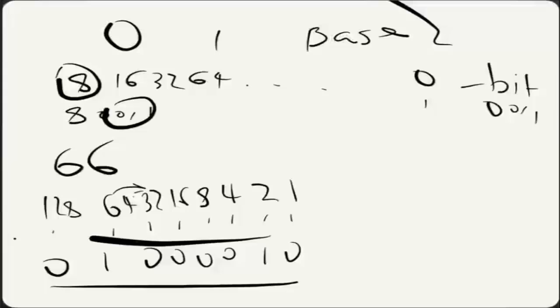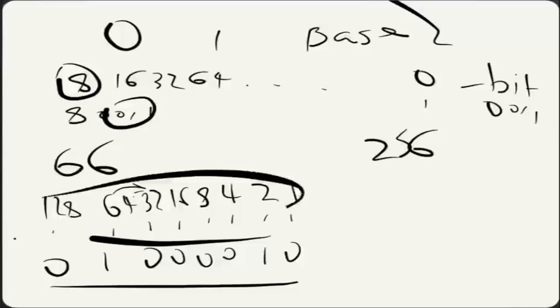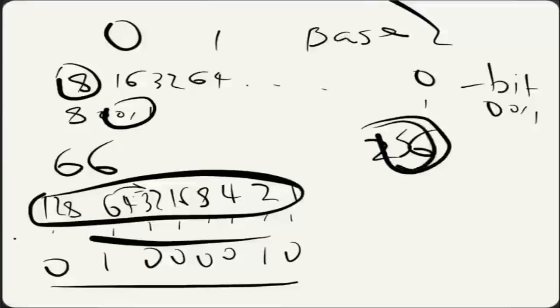So that was basically a crash course in converting numbers to binary. I also want to mention — if you know about old arcade systems and know that they had a limited amount of colors and a limited amount of tones — it's because 8-bit systems can only represent 256 values. If you added up all those numbers, it would equal 256. The reason they only had a limited number of colors and tones is because they could only have 256 values. So they could only have 256 colors and 256 tones — that's why they were the way they were, because of this limitation of 256 values.